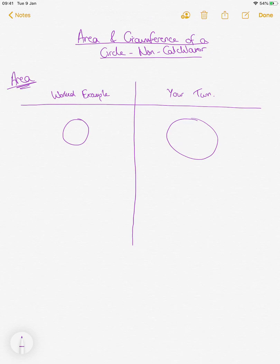Hi, year 10. Today's lesson is on area and circumference of a circle and I'm going to make it a bit harder by doing it without a calculator today. We're going to start by looking at area and I'll go through this work example on the left. I'll do it in silence, then talk through it and then you can have a go at the your turn one.